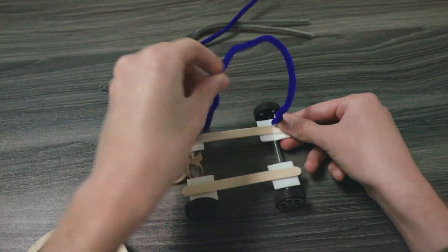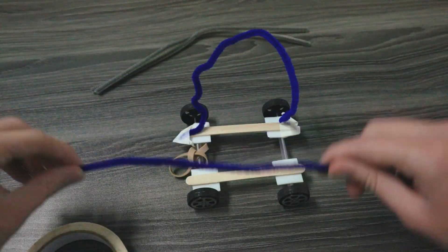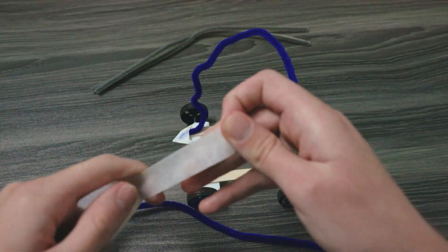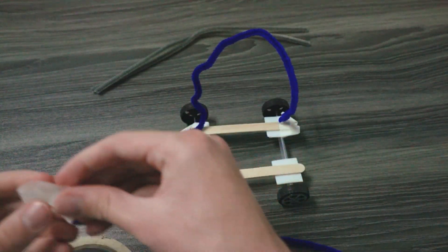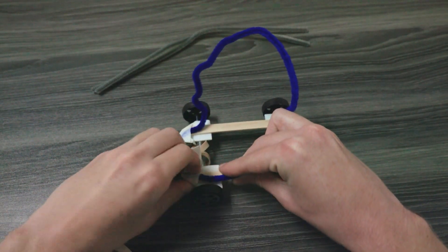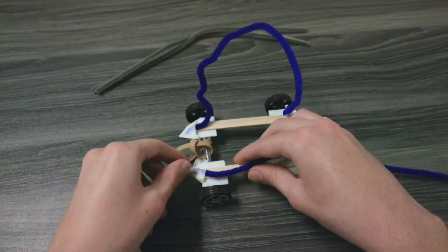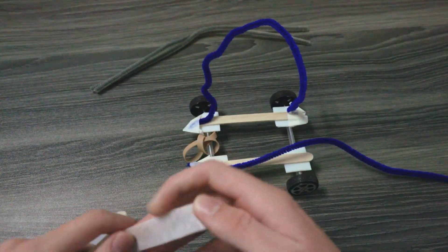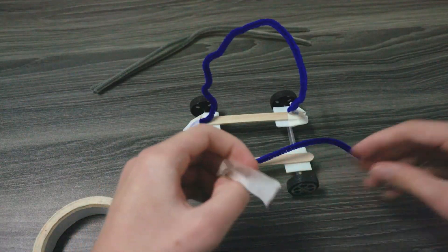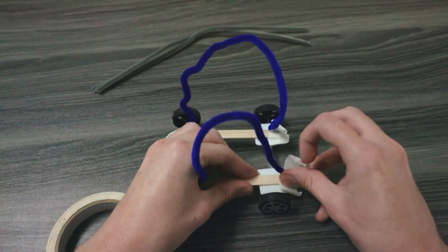When they are taping things on they should make sure that the tape is not coming in contact with the wheels as it could prevent them from spinning when we test our design. You'll also want to make sure that that rubber band at the front is able to move and stretch, which we will use for launching the car in a minute.